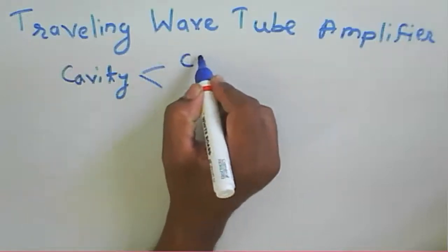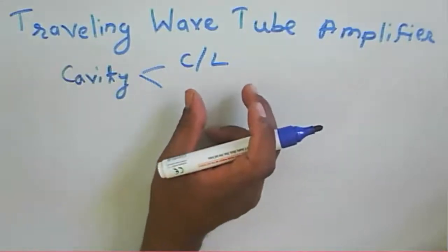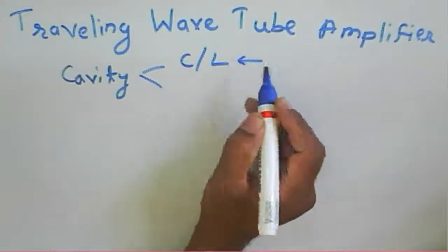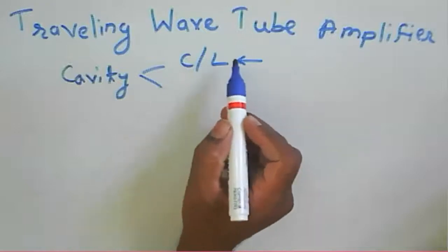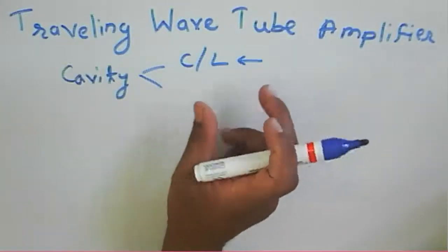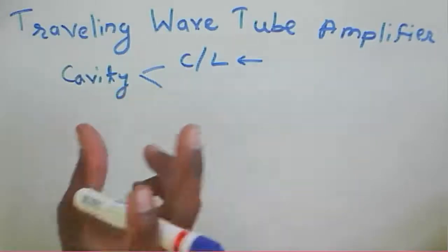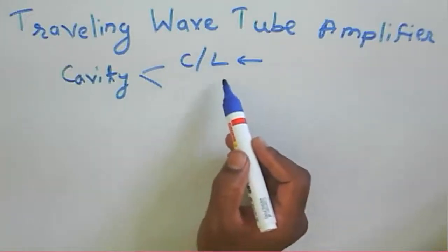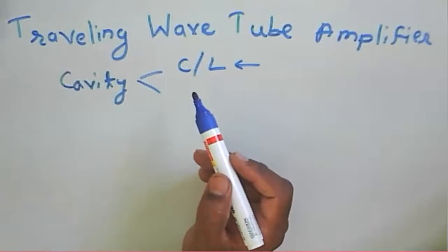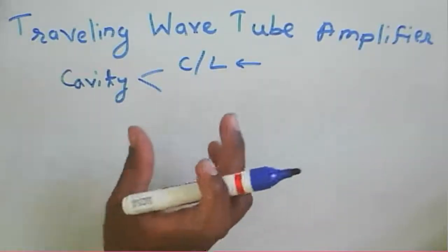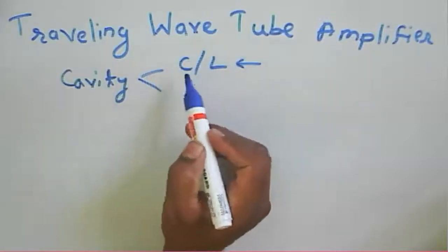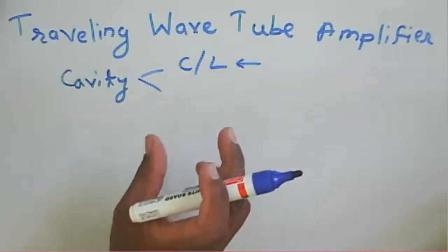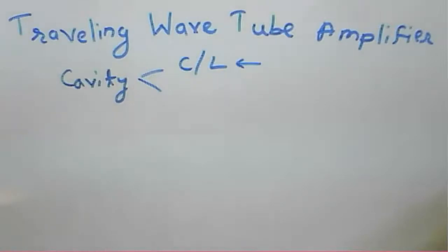A cavity has capacitors and inductors, and the resonant frequency depends upon the inductance as well as the capacitance. In a two-cavity klystron amplifier, the cavity operating frequency depends upon capacitance and inductance, and the cavity has a resonant frequency depending on inductance and capacitance. We say that the gain bandwidth product is limited — there are limitations of the gain bandwidth product based on this resonant circuit. Generally we need to get large output.